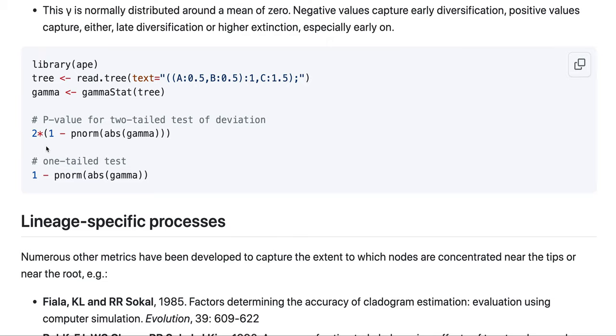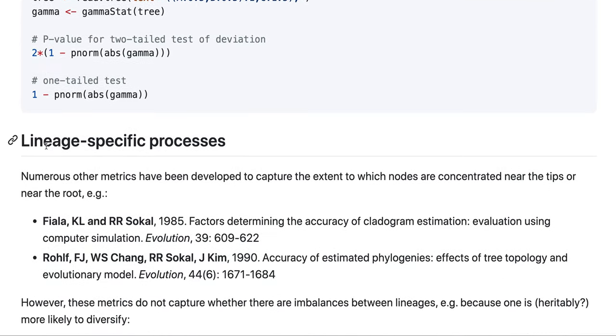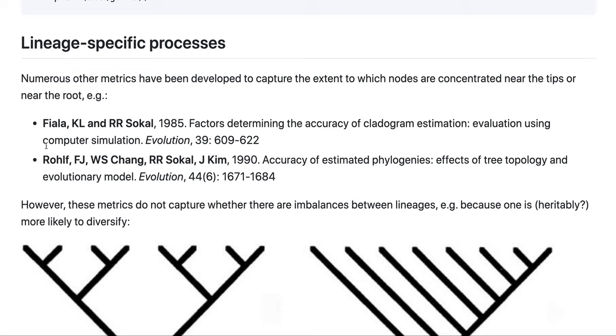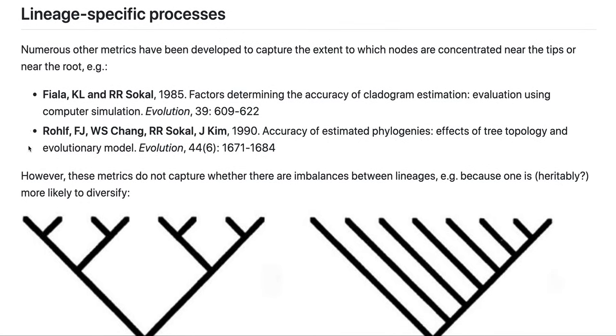Now, what can also happen is that it's not so much early or late, but that it's specific to some lineages. And for that there are also metrics, two of which are from the olden days. And both what they are trying to capture is essentially the asymmetry in phylogenetic tree shapes.